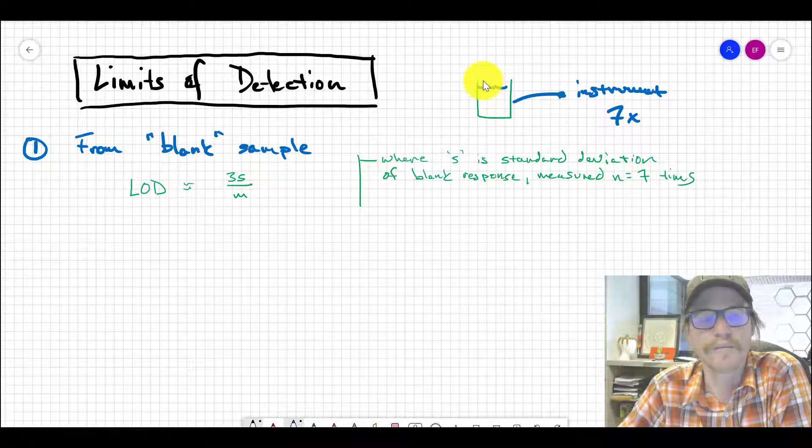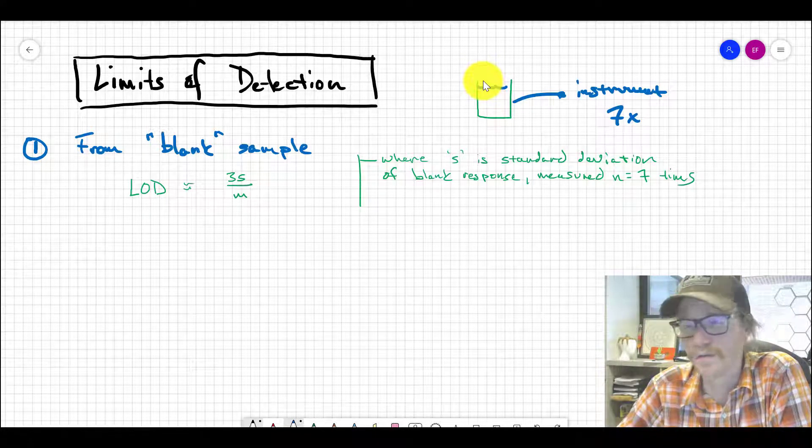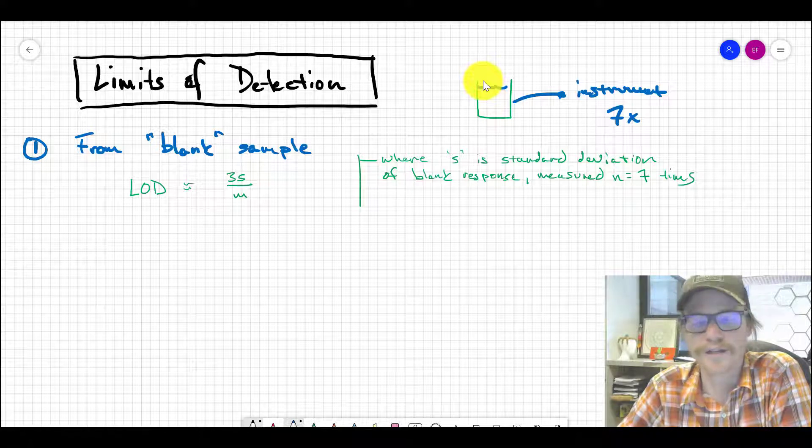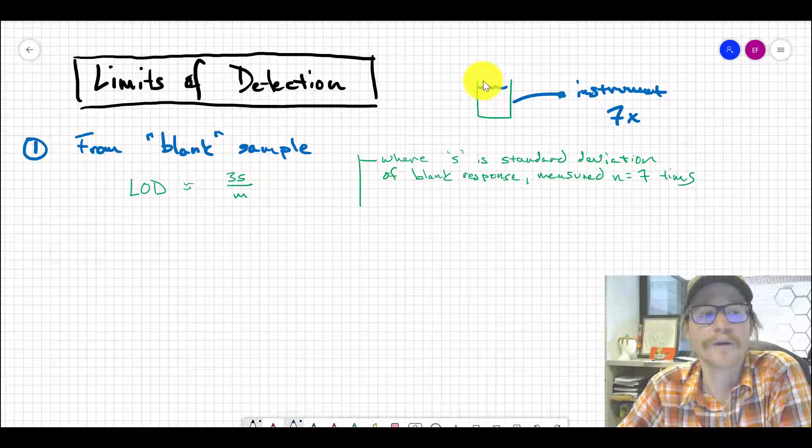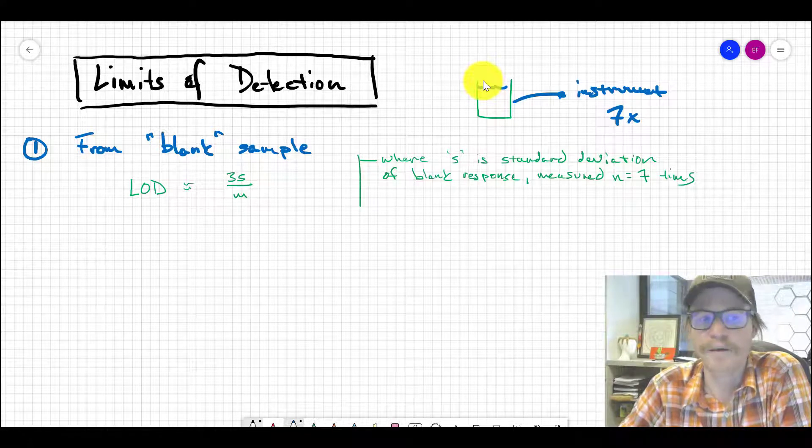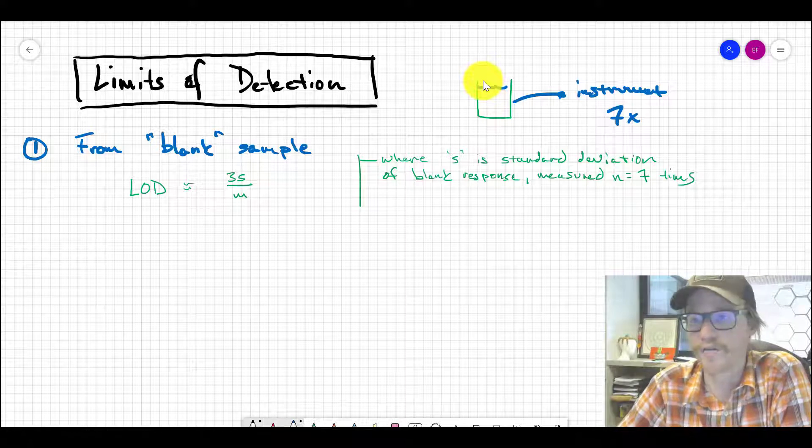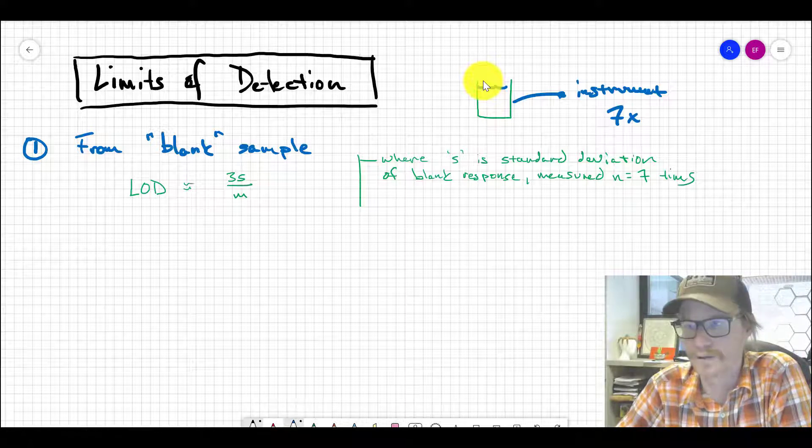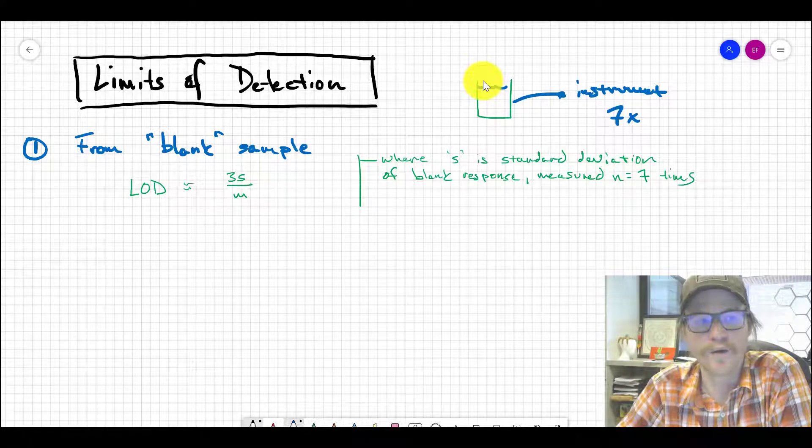The limit of detection is three times the standard deviation in whatever the response units are. So if it's absorbance, you take the standard deviation of absorbance values times three, then divide by M, the slope of the calibration curve. That's the basic way to measure LOD using a blank sample measured seven times.